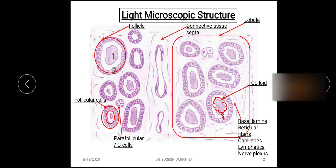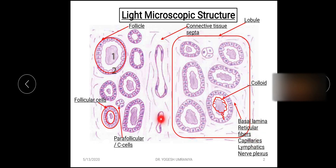The outer aspect of this follicle is covered with a basal lamina. Here you can see the basal lamina, which is covered by reticular fibers as well as capillaries, lymphatics, and nerve plexuses. These lymphatics, capillaries, and nerves are entering into the gland via the connective tissue septa. Within the connective tissue you can also see the blood vessels, lymphatics, and nerves.